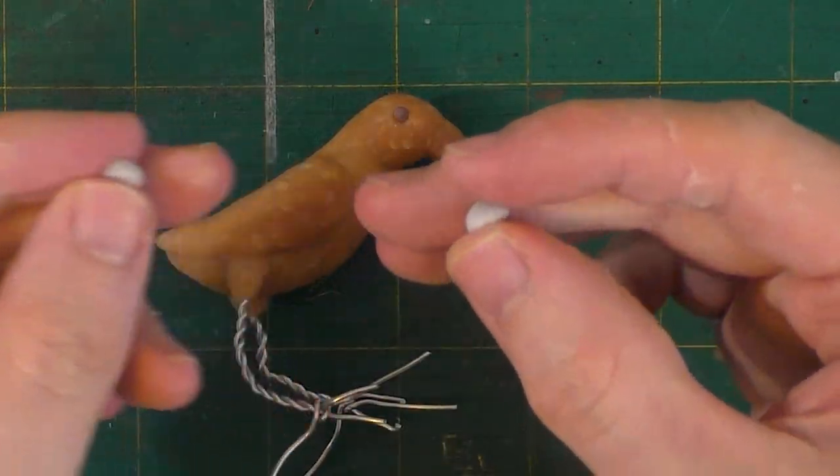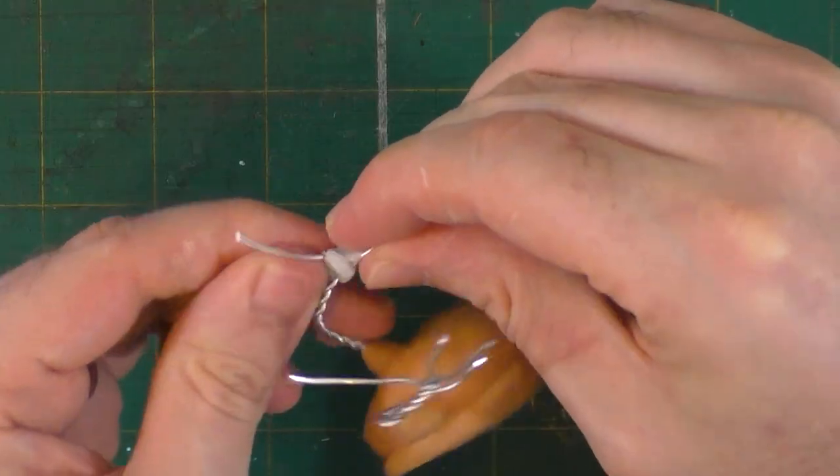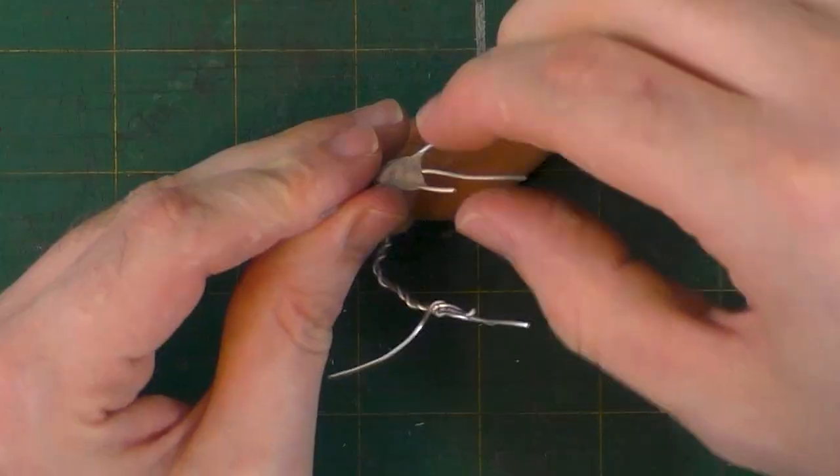I'm just going to mix up a bit of plumber's epoxy which I'll sculpt into the sort of palms of the crow's talons. Once this epoxy is mixed, I have about 5 minutes to work with it.